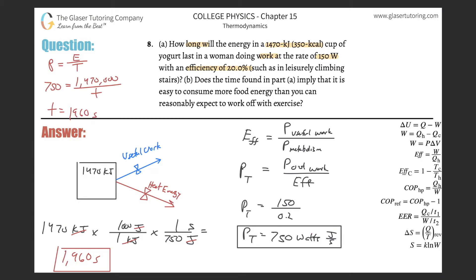So 1960 seconds - that's an answer we can leave there, but we can convert to minutes. Divide by 60, that's about 32 minutes, 32.7 minutes. About half an hour.